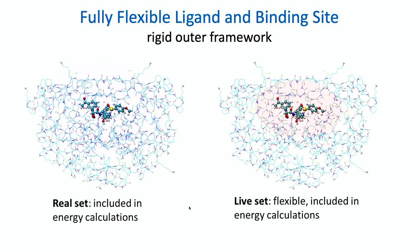We carve out a part of the protein around the binding site to keep the conformational search tractable. We define a real set of atoms included in the calculation, defined by a distance cutoff to some reference molecule in the binding site — completing whole residues to generate this real set. The live set is a subset of the real set: these are the atoms we allow to move, defined by an atom-based cutoff.